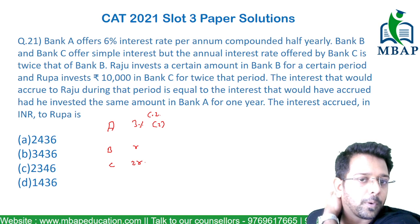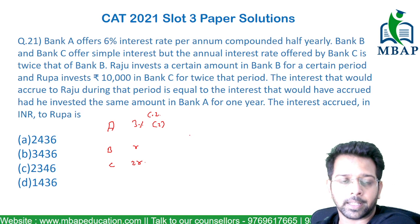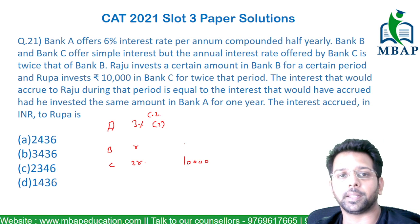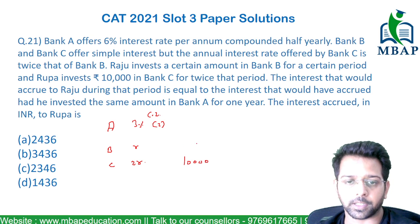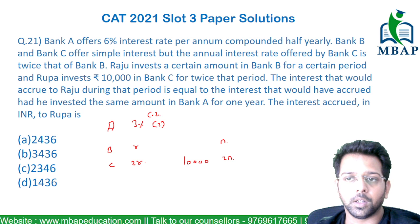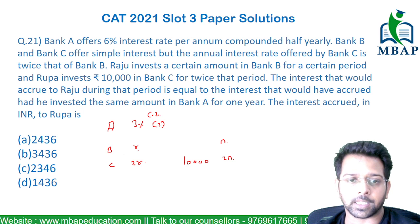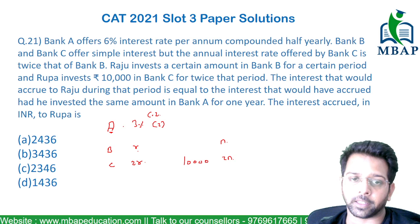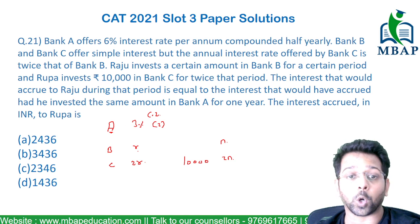Raju invested some amount — I don't know which amount — but Rupa has invested 10,000 for twice the period for which Raju has invested in Bank B. So if B has invested for N years, then C will invest for 2N years. What Raju acquires at rate R for N years in Bank B is the same as what you get in Bank A compounded. That's the common link.